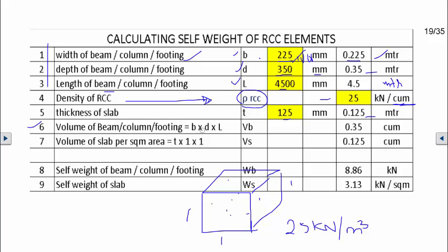Here we are calculating volume of beam, which is b × d × l. Multiplication of this into this is calculated as 0.35 cubic meter. Similarly, volume of slab per square meter area—we are assuming the slab is 1 mm thickness with an area of 1 meter by 1 meter. Volume equals thickness into 1 meter width into 1 meter length, which is 0.125 cubic meter. All in meters will give you meter cube.